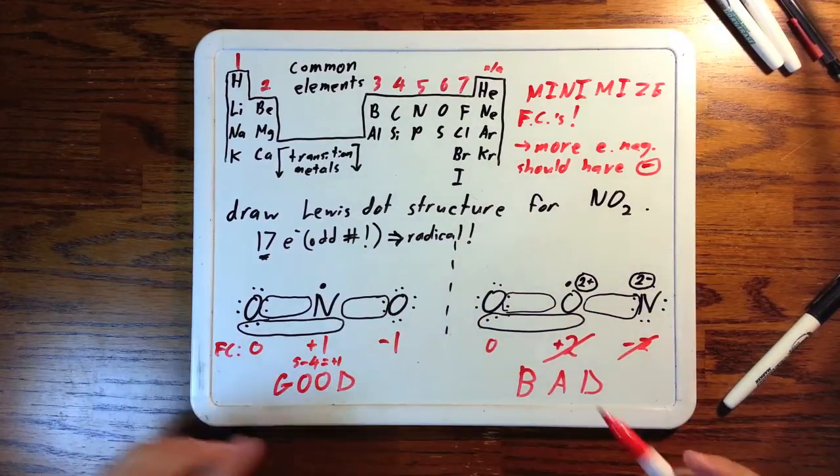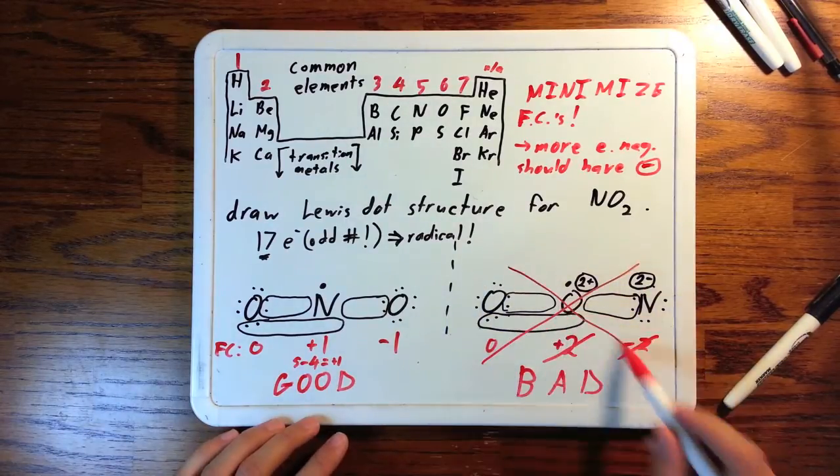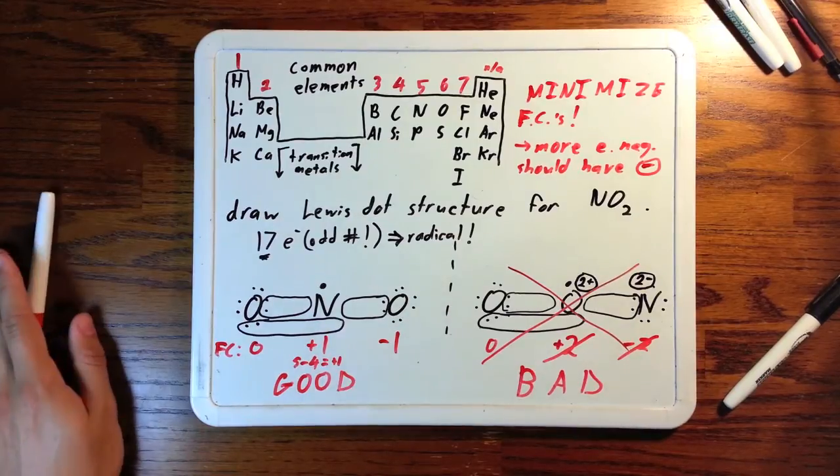Therefore, we can conclude that the structure on the left is what NO2 looks like. We haven't drawn all the resonance structures, but that's the configuration.